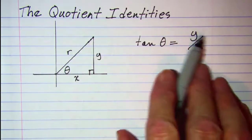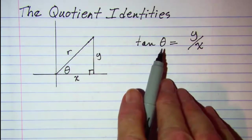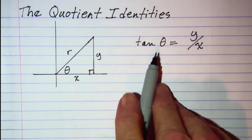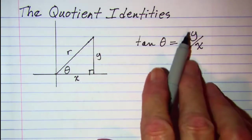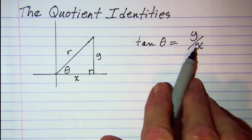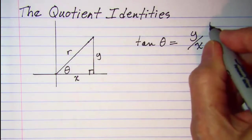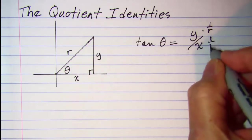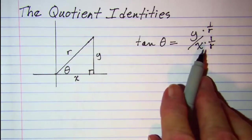We also know that this is the definition of our tangent theta for a circular function. Now if I want to write my tangent theta in terms of sine and cosine, I'd like for this to be y over r and this to be x over r, and I can multiply top and bottom of this ratio by 1 over r and not change the value of this fraction.